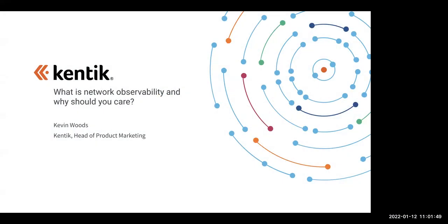Hello and thank you everyone for joining today's webinar. I'm Jordan Sloop, your host from Kentik Marketing. Our topic for today is: what is network observability and why should you care? Our presenter is Kevin Woods, Director of Product Marketing. Kevin will review why network observability is the most important new concept to hit the network performance monitoring space in years, discuss the term's origin, how to relate it to APM and DevOps, and what you need to do to make it work for you. If you have any questions during the webinar, feel free to enter them in the Zoom chat. We will answer as many as we can in the Q&A session at the end.